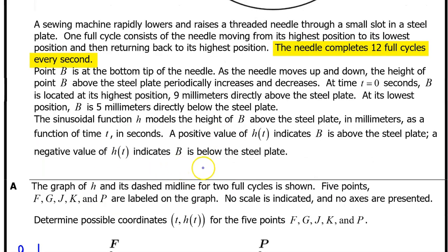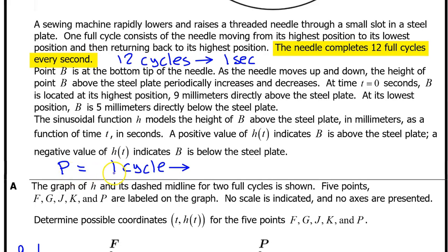To find the remaining input values, we need to determine the period. We are indirectly told the period right here. The needle completes 12 cycles every second. But the period is the duration of one cycle. We can turn 12 cycles into one cycle by dividing both sides by 12. If we divide by 12 on the left and the right, we discover that one cycle is 1/12th of a second. So that's the period. P is 1 over 12.